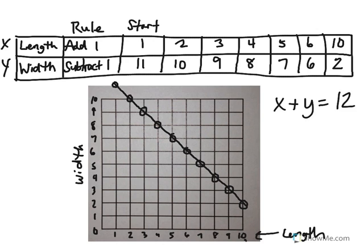One thing you might notice, that this means that the perimeter is always going to be 24. Because if I take two lengths and two widths and add it up, I'm always going to get 24, no matter what.